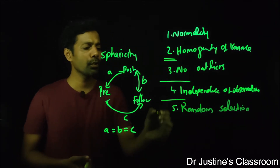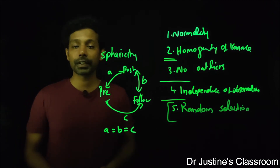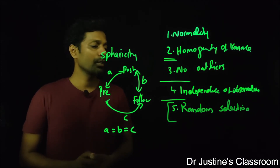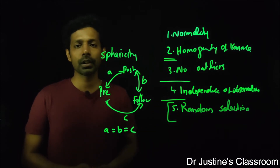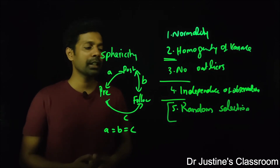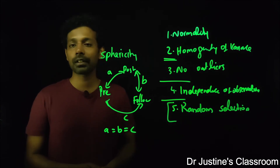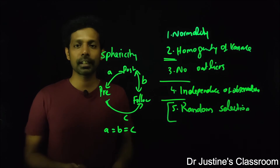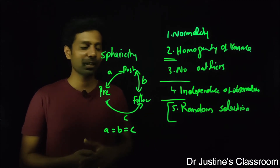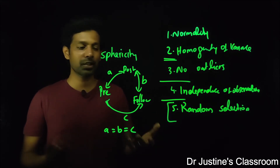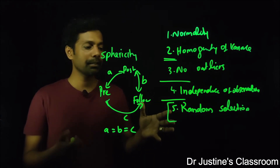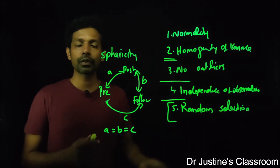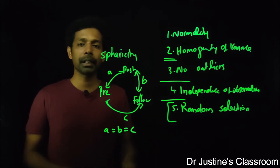There is some controversy about random selection — some researchers say it's not strictly required, while some textbooks list it as a major assumption for parametric tests. Because of this debate, many researchers either use non-parametric tests when random selection isn't met, or they explicitly state that their sampling method was based on random selection.